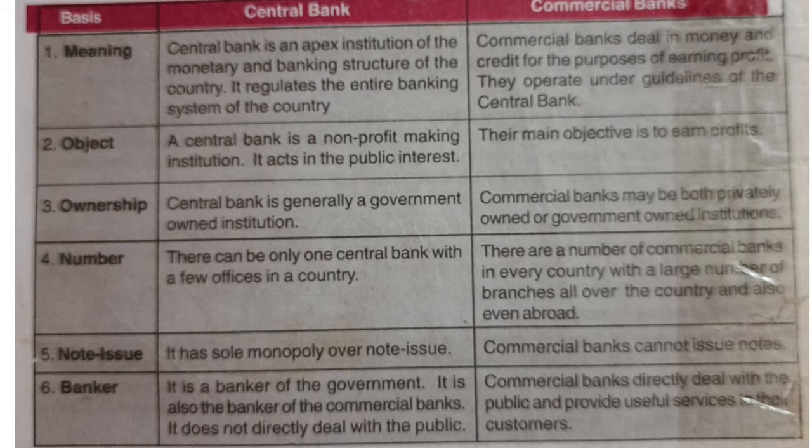Number 1: Meaning. A central bank is an apex institution of the monetary and banking structure of the country, and it completely regulates the entire financial system of a country. On the other hand, commercial banks deal in money and credit, and the main purpose of a commercial bank is earning profit.